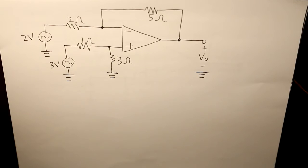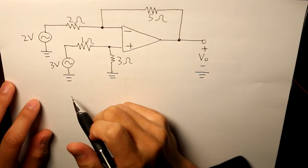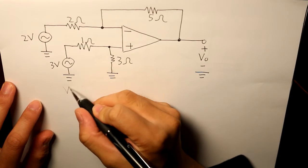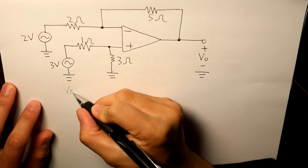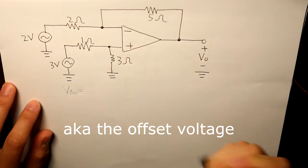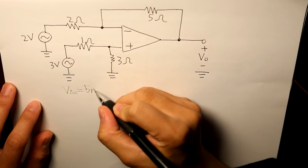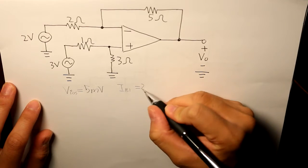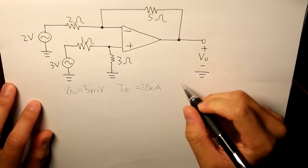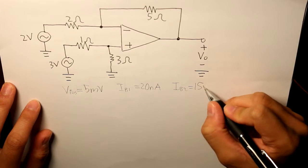And this is our op amp. We'll label the following things that we need to label. VIOS will be equal to 5 millivolts, IB1 will be equal to 20 nanoamps, and IB2 will be equal to 15 nanoamps.